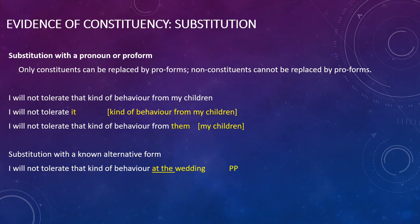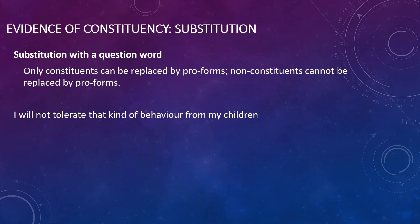Here's another example. If you take the sentence 'I will not tolerate that kind of behavior from my children,' we might not be sure what kind of constituent it is. We can replace it with another noun phrase — for instance, we know 'a film' is a noun phrase. Can we substitute it? 'I will not tolerate a film to be shown during the lecture.' The fact that we can substitute one chunk with another shows that these chunks are logically the same, and if we know one is a noun phrase, the other must be too.